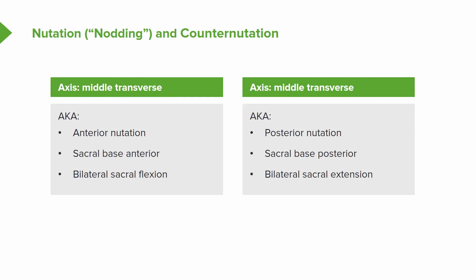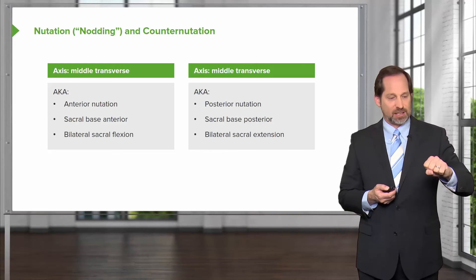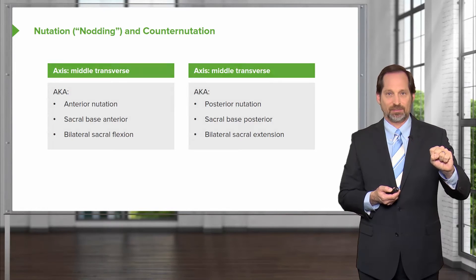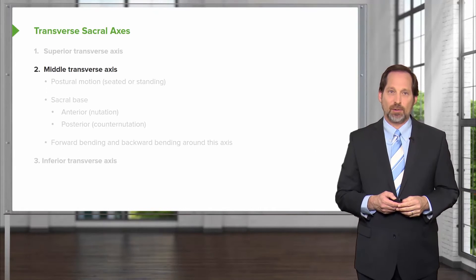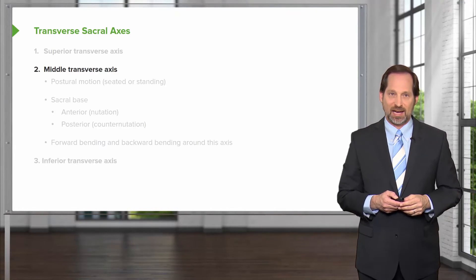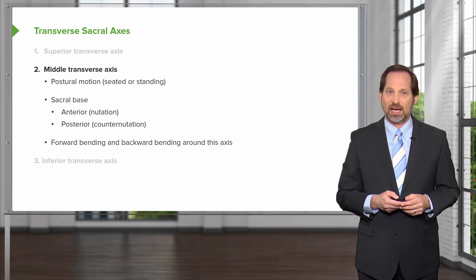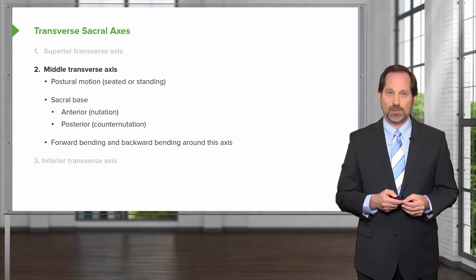We talk about nutation and counter-nutation — it's really about how breathing affects the sacrum and where it goes. With posterior nutation or counter-nutation, the sacral base moves posteriorly and you're going to have bilateral sacral extension. That's the motion along the middle transverse axis, involving postural motion and sacral base motion.